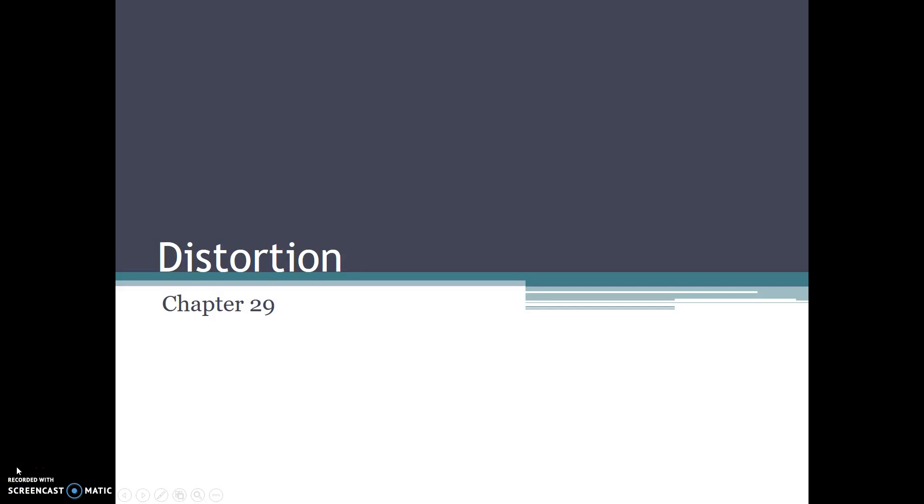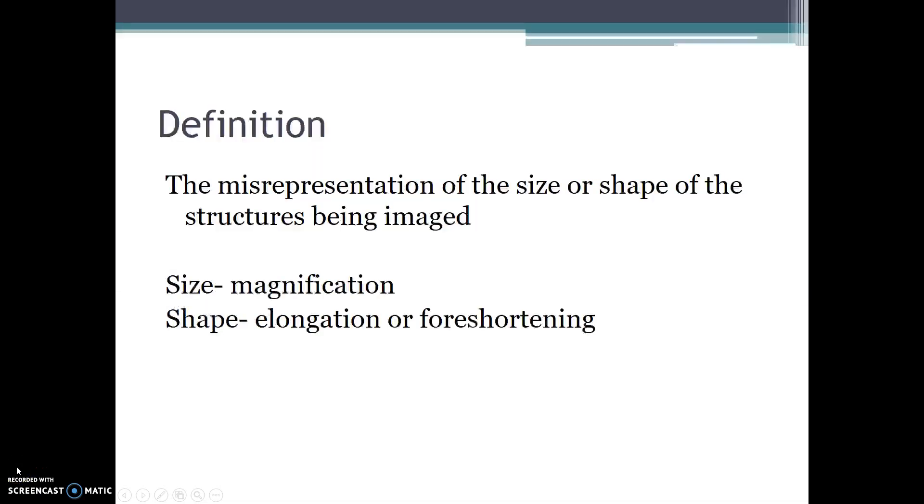Today's lecture is going to cover distortion. Distortion is the misrepresentation of the size or shape of the structures being imaged. Size distortion involves magnification. Shape distortion involves elongation or foreshortening.